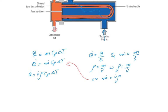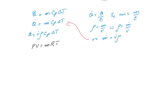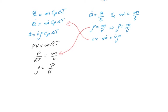Now we're going to use the ideal gas law, which is pressure multiplied by volume equals mass times RT. We can also write this as P over RT equals M over V, which is density. So density equals pressure over the ideal gas constant multiplied by temperature.